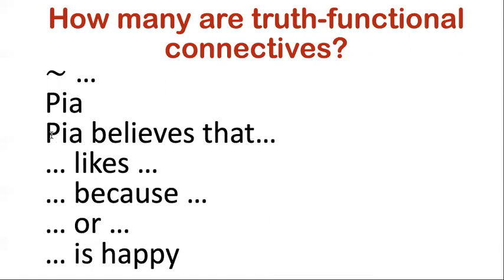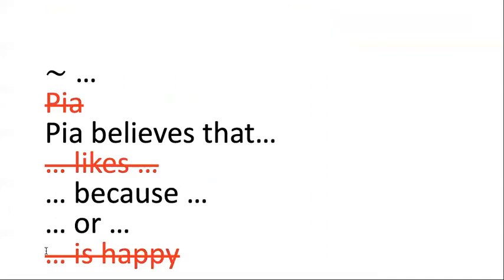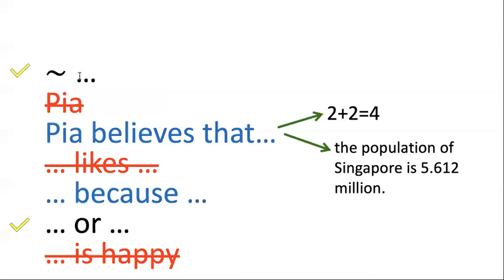Is 'likes' a truth functional connective? No — this is not a connective because you don't put whole sentences in there. 'Because' — remember we said this is a connective — but 'because' is actually not a truth functional connective. 'Or' is another Boolean connective, so 'or' is truth functional. And 'is happy' is not a connective. So crossing off all the non-connectives: negation and 'or' are truth functional, while 'Pia believes that' and 'because' are not.